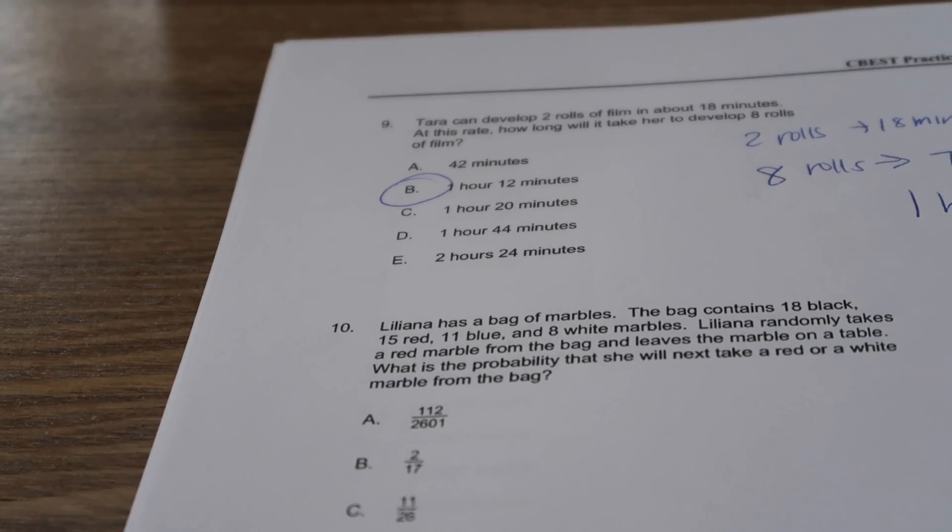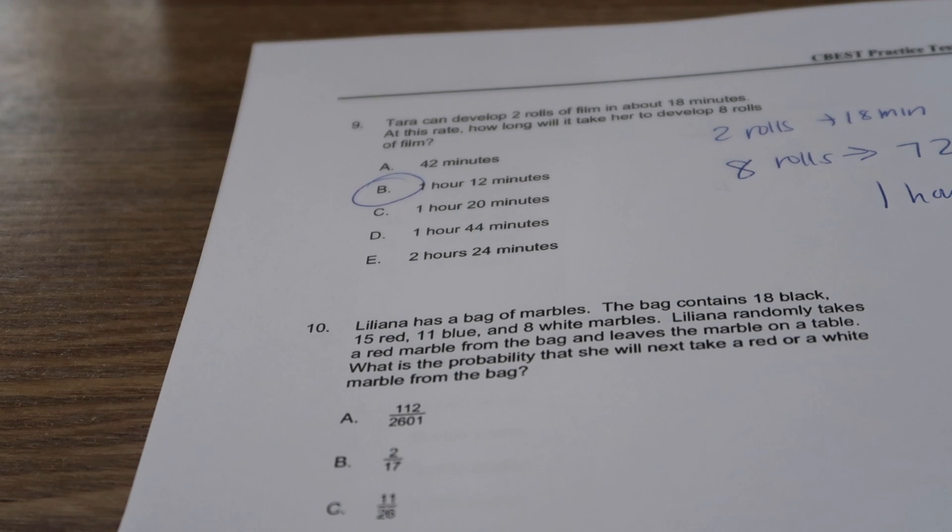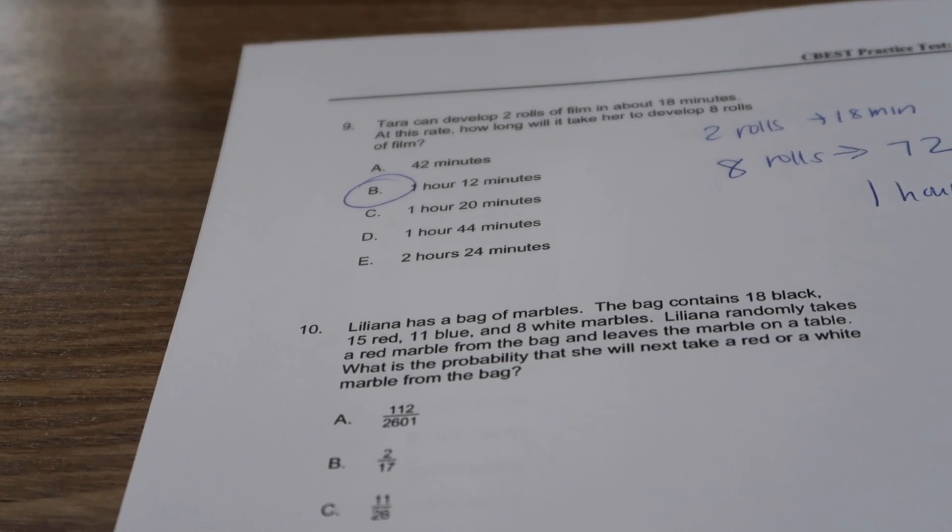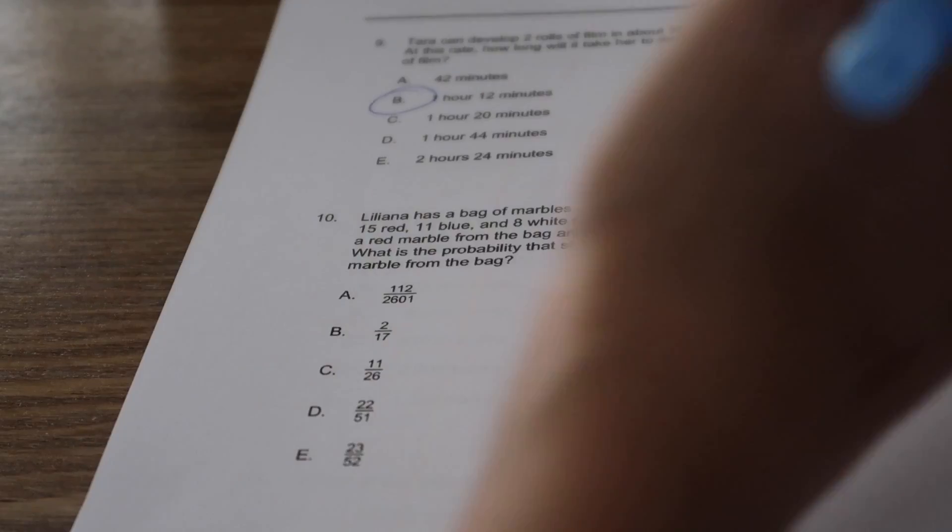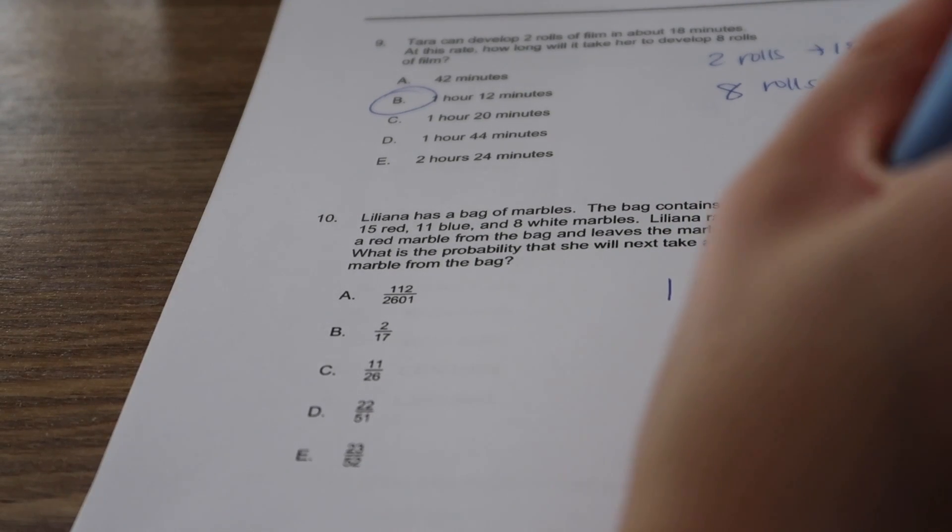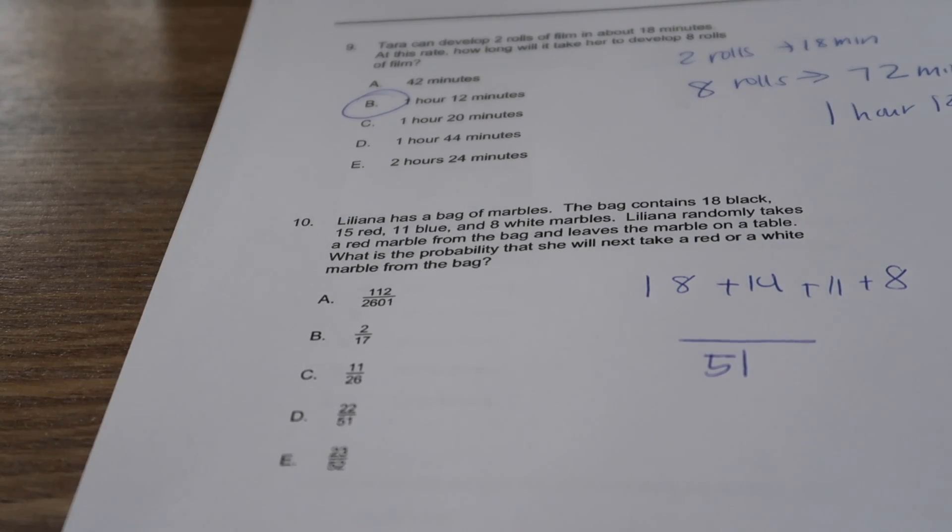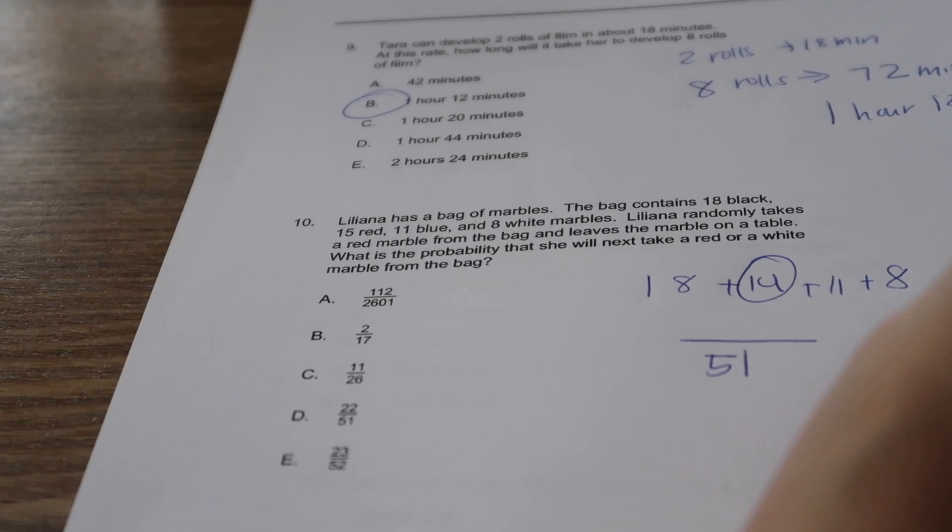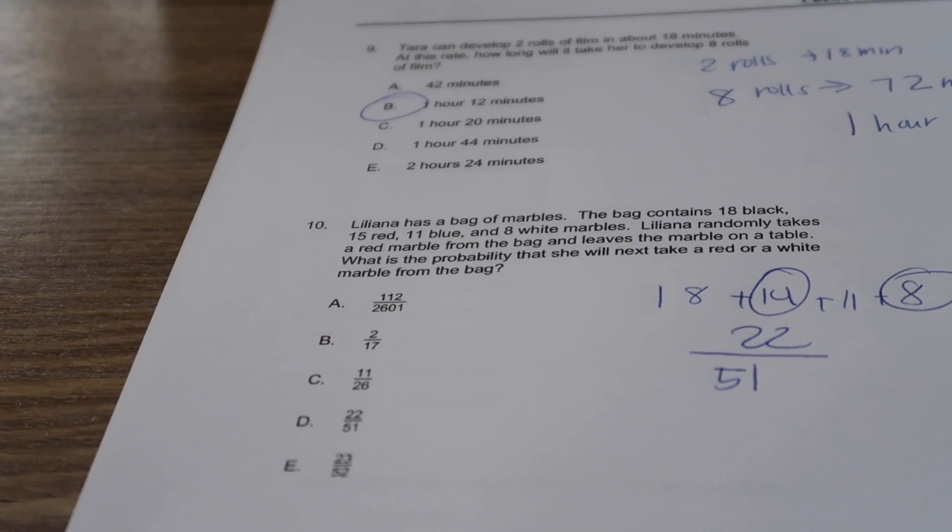This is like probability. Liliana has a bag of marbles. The bag contains 18 black, 15 red, 11 blue, and 8 white. Liliana randomly takes a red marble from the bag and leaves the marble on a table, so the red marble is now one less. What is the probability that she will next take a red or a white marble from the bag? There's 18 plus 14 plus 11 plus 8, and the total is 51. Now what's the probability she will take a red or a white? We have 14 red and 8 white. That means we're going to add those two together and you get 22. So her probability is 22 out of 51. If it just said red, then it would be 14 over 51. If it just said white, it would be 8 over 51. So D.